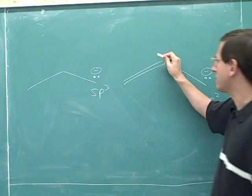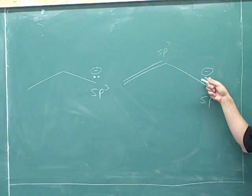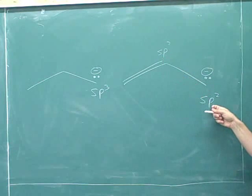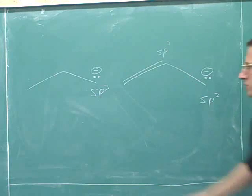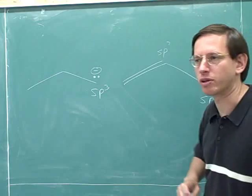This carbon up here is sp2, and this carbon has a lone pair. If you have a lone pair and you're connected to an sp2 atom, you're also sp2. So this carbon was sp3, but this one is sp2. That's the exception that we learned about earlier.